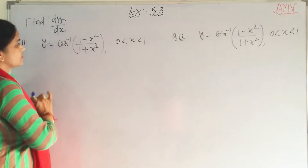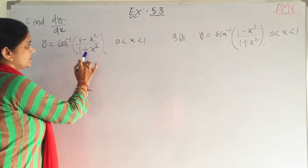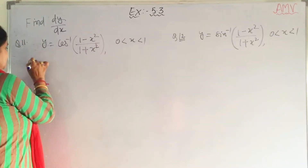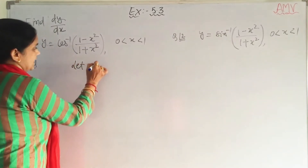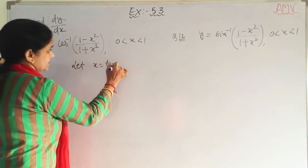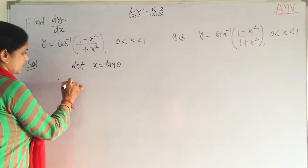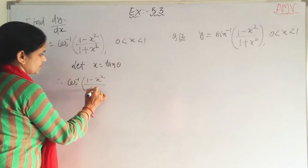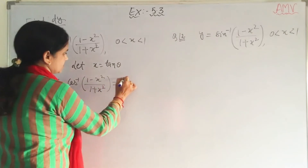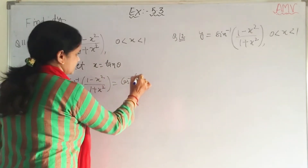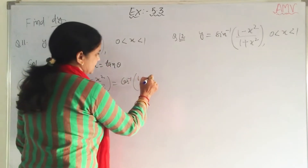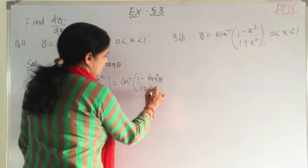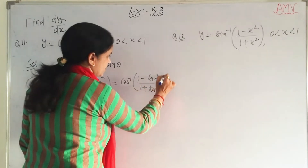Here y is equal to cos inverse of (1 minus x square) upon (1 plus x square). Let x be equal to tan theta. Then cos inverse (1 minus x square) upon (1 plus x square) becomes cos inverse (1 minus tan square theta) upon (1 plus tan square theta).